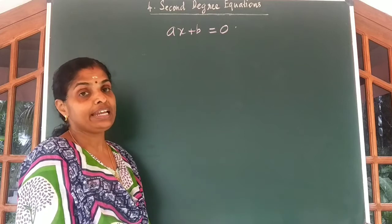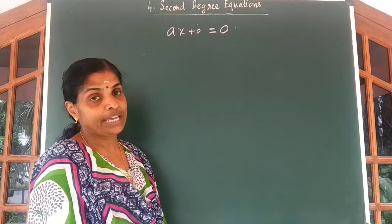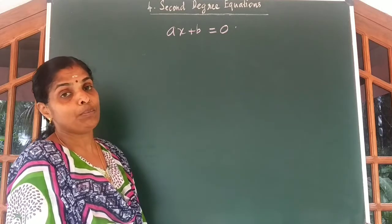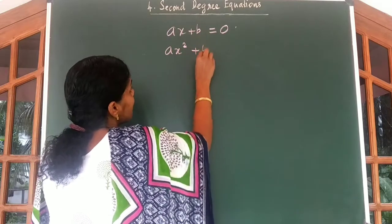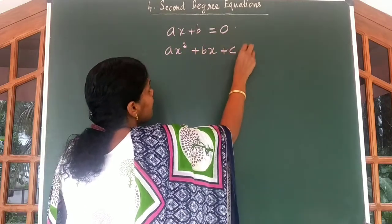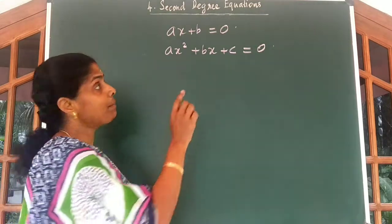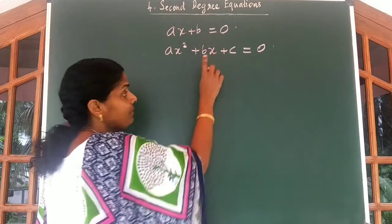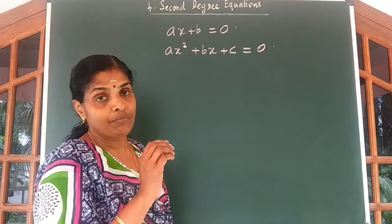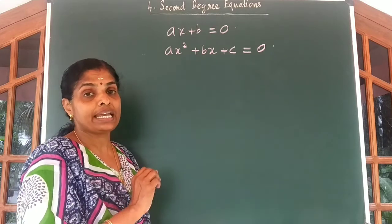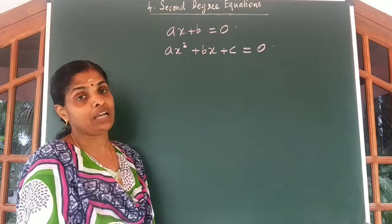In 10th standard, we are going to study about 2nd degree equations. The general form of a 2nd degree equation is AX squared plus BX plus C equal to 0. Here, the variable used is X. You have only one variable and the highest degree is 2. We are going to solve 2nd degree equations and find their solutions.